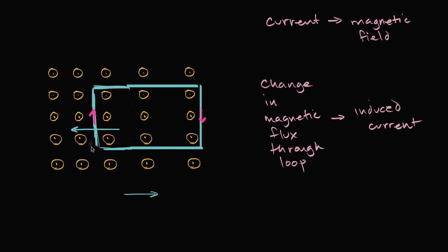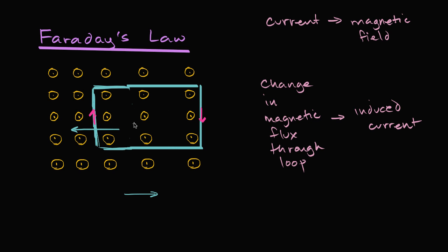This whole idea of a change in magnetic flux inducing a current is the essence of Faraday's Law — and we'll go deeper into it and quantify it more in future videos. The core notion is: if I have a loop of wire and a changing magnetic flux through that loop, it is going to induce a current in that wire.